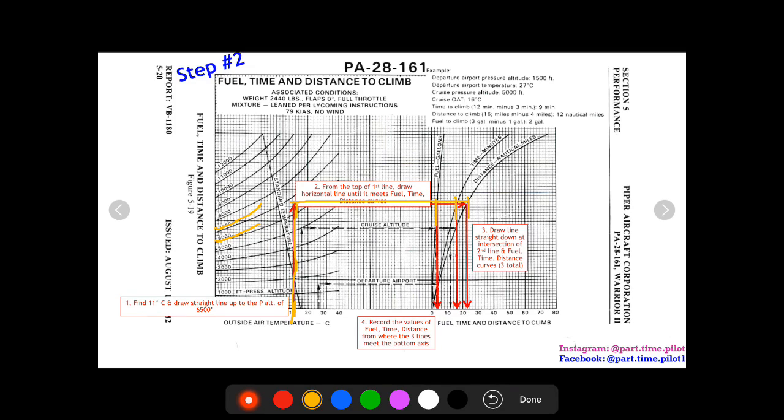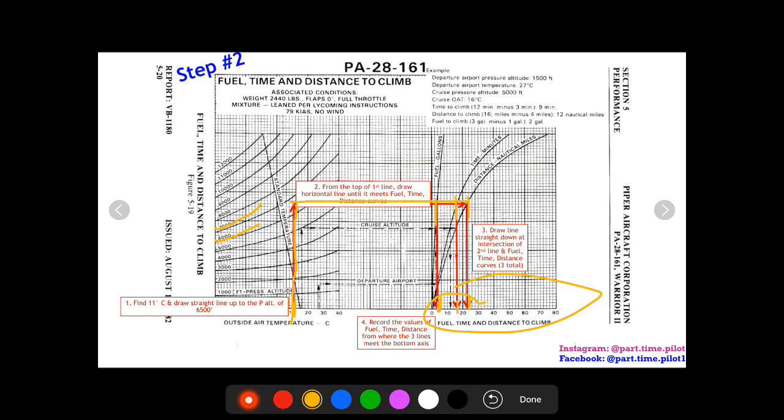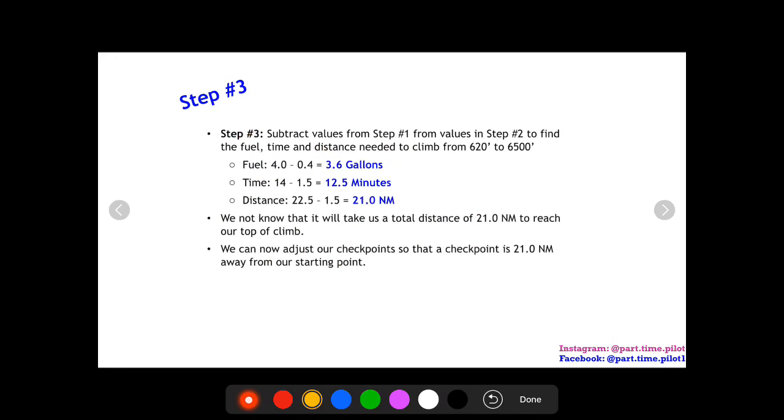We draw it all the way down and then we can read off our values on this x-axis down here. And what do we get? We get a fuel value of four gallons, time value of 14 minutes, and distance value of 22.5 nautical miles. So now our final step, step number three, we subtract the values we just got from the values we got before in step one at our takeoff airport.